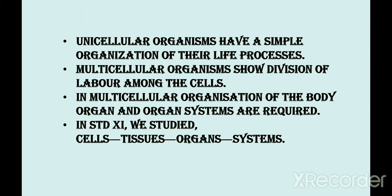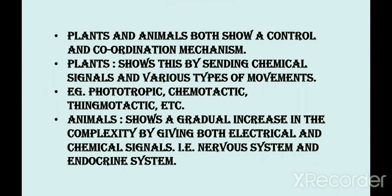Both plants and animals show control and coordination mechanisms. Plants show this by sending chemical signals and various types of movements, for example phototropic movement and chemotactic movement. Animals show a gradual increase in complexity by giving both electrical and chemical signals, through the nervous system and endocrine system. These two systems work together, but we have to study the nervous system and endocrine system separately. Let's start with nervous coordination.